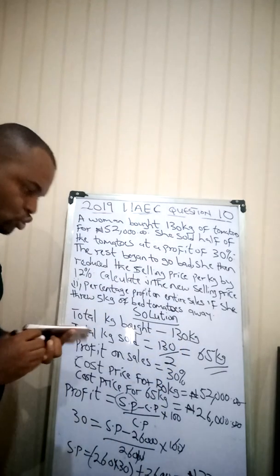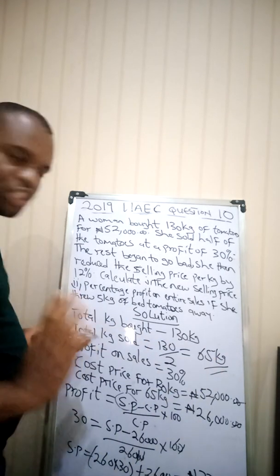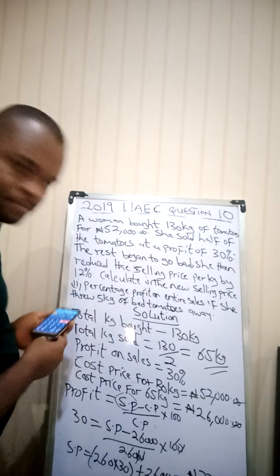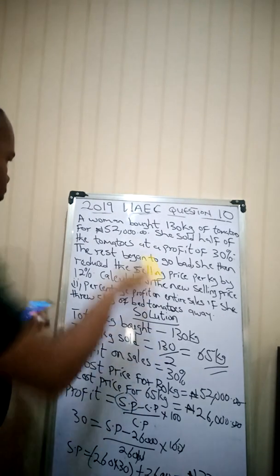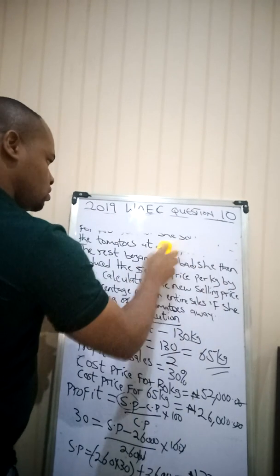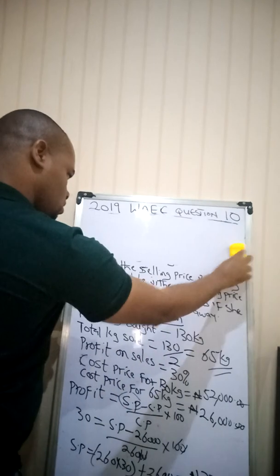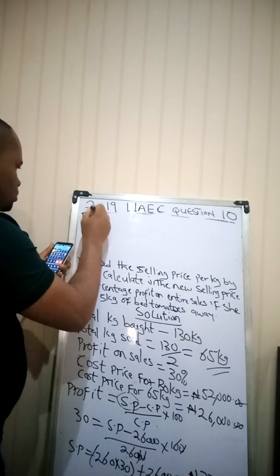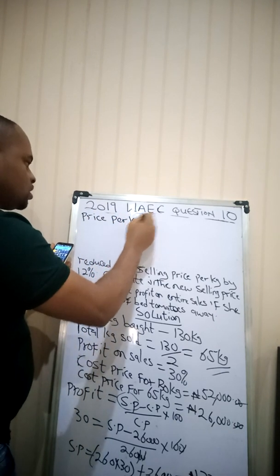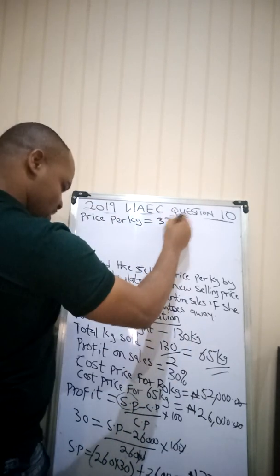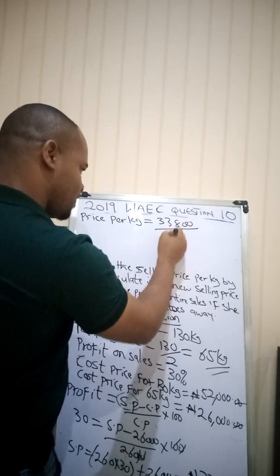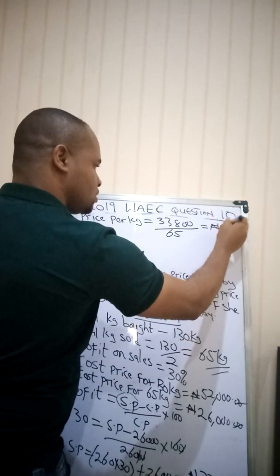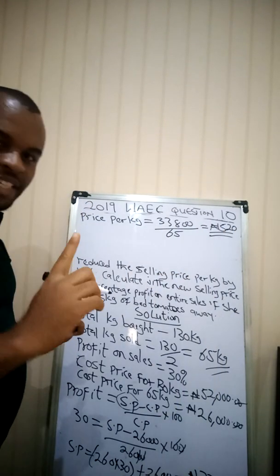This is the amount that she sold the 65 kg for to make a profit of 30%. Now we need to get the amount per kg — how much did she sell one kg? Price per kg will be equal to the total selling price of 33,800 divided by 65 kg, which gives 520 Naira per kg.